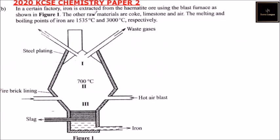In a certain factory, iron is extracted from the Haematite ore using the blast furnace as shown in figure one. The other raw materials are coke, limestone, and air. The melting and boiling points of iron are 1535 degrees centigrade and 3000 degrees centigrade respectively. So we have the furnace here — we have iron, hot air, three stages, fire brick lining, iron being produced, and waste gases.